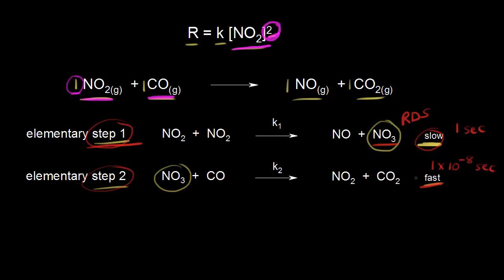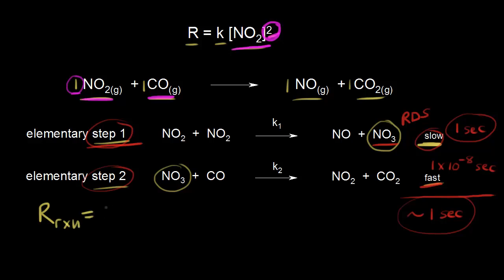So what's the total time for our reaction? We add those two times together: one second plus one times 10 to the negative eight seconds gives us approximately one second total. The effective rate of the reaction is determined by the time consumed during the slow step. The slow step took one second, and that's essentially how long our overall reaction took. So the rate of the overall reaction should be equal to the rate of the rate determining step. If we can figure out the rate law for the rate determining step, that's a good approximation of the overall reaction rate.